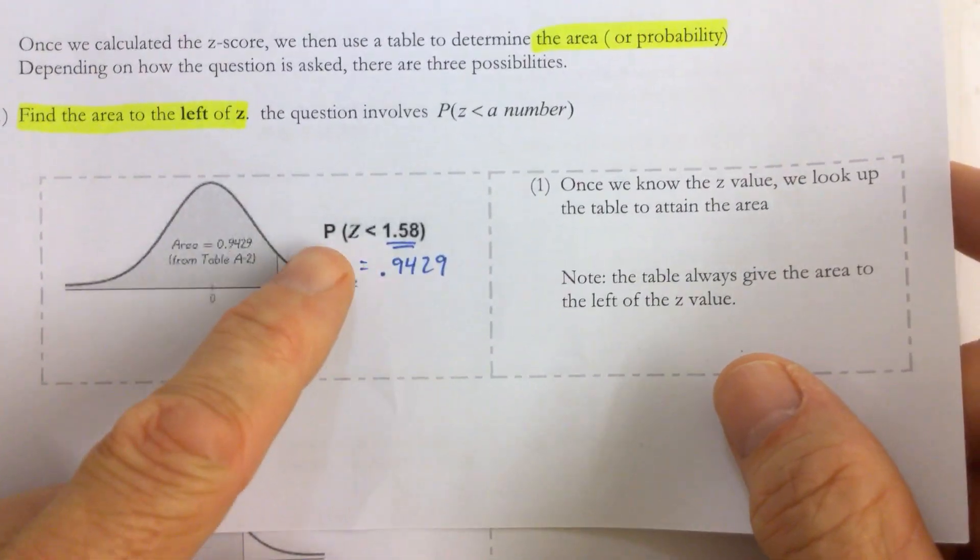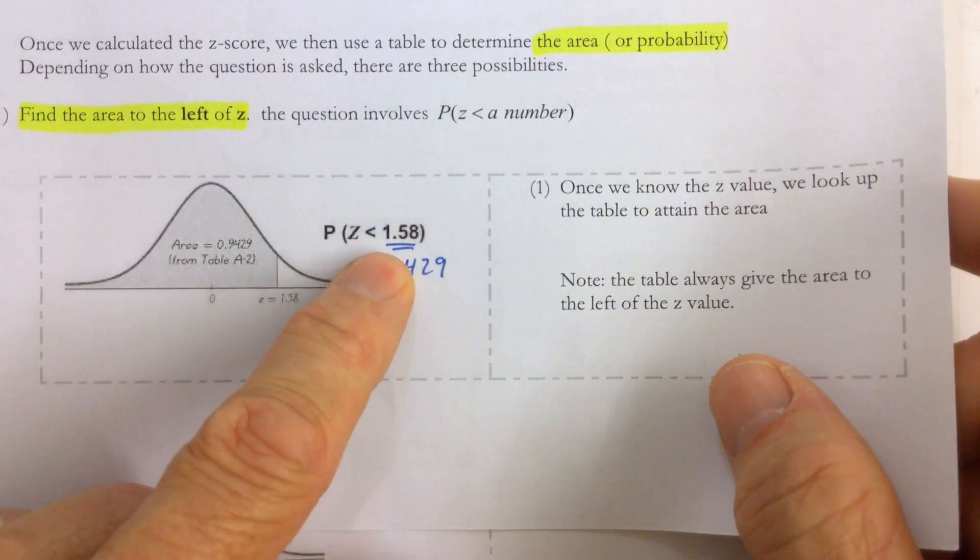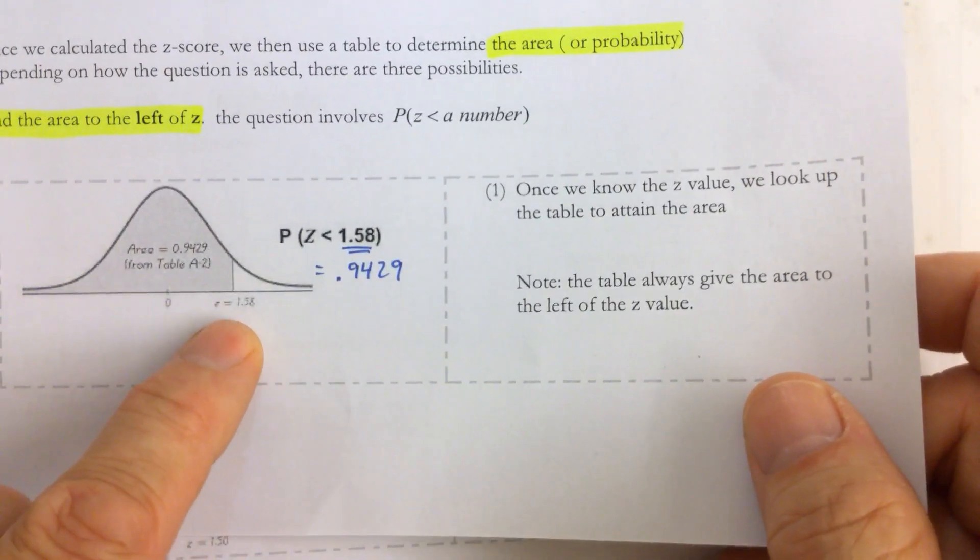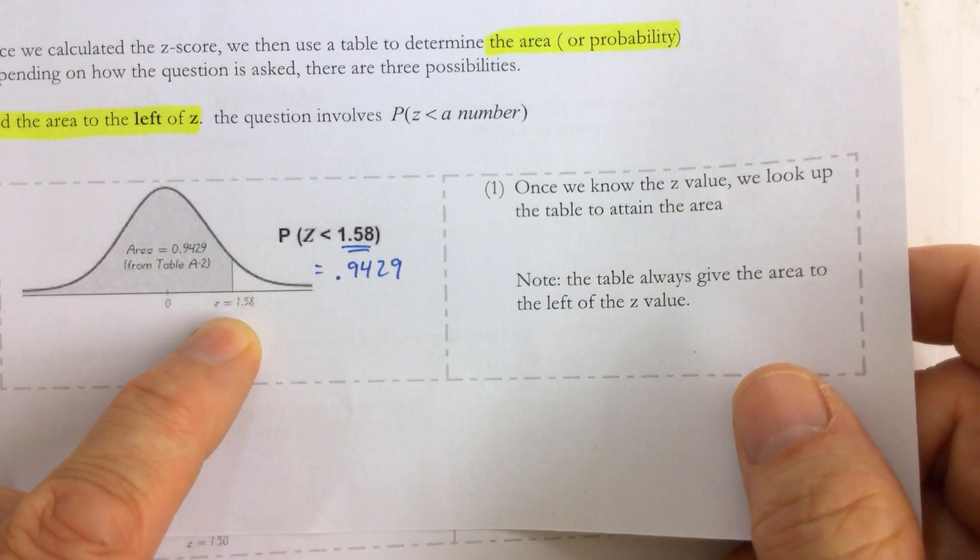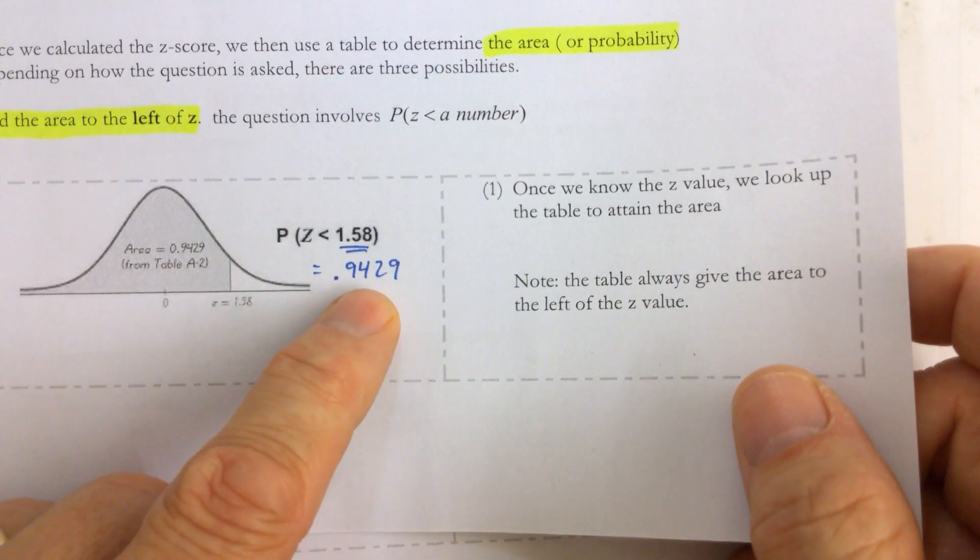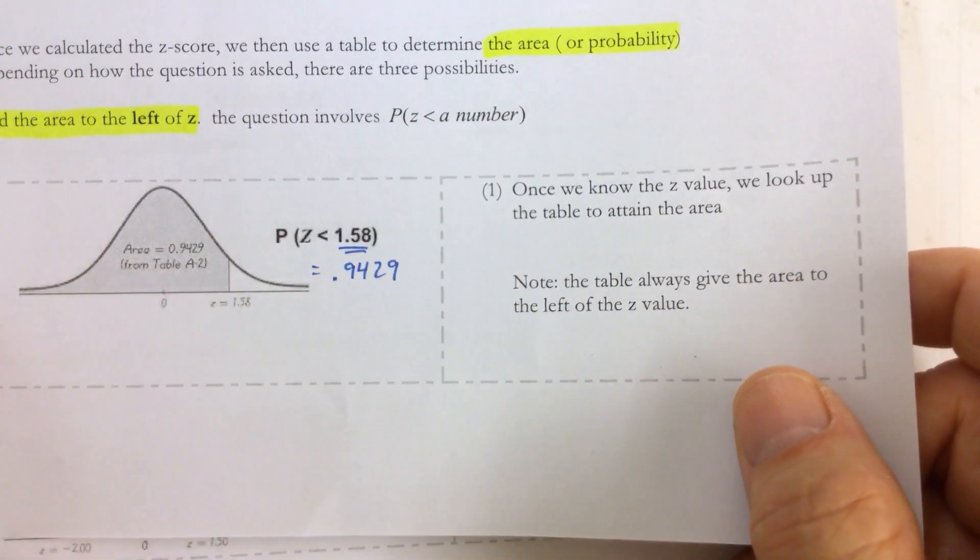Just to remind you what we just did, the first probability question was: what's the probability that the z-score is less than a certain number? So all we did was we found 1.58 in the z-score table, and we found the number associated with that, and that's the area to the left of that line.